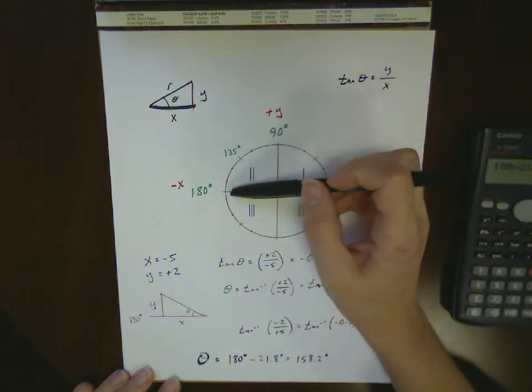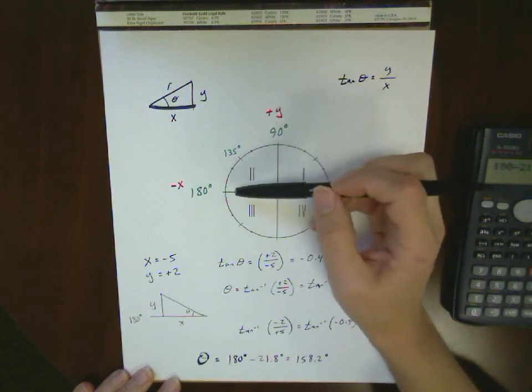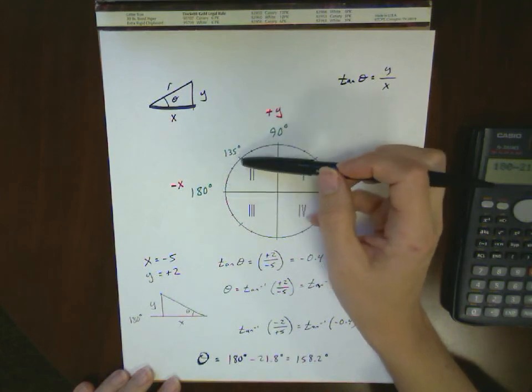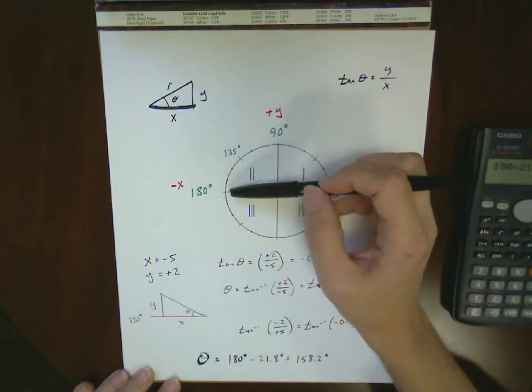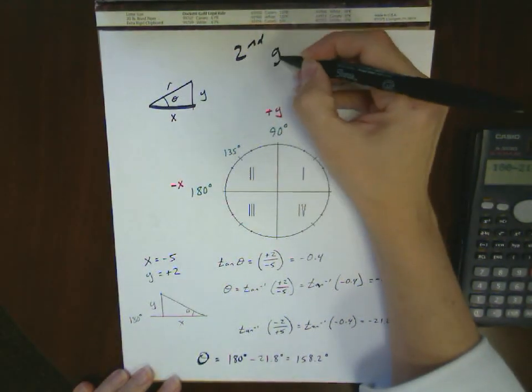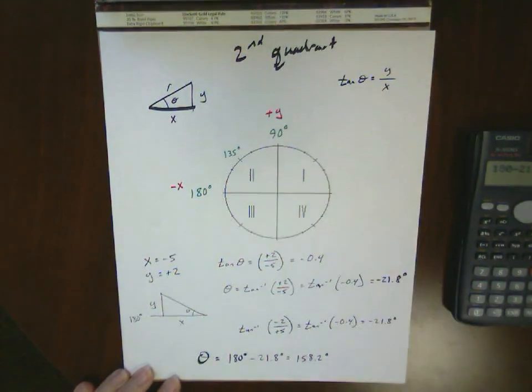I've got a larger value of x, the 5, in the negative direction, and a smaller value of 2 in the y direction. So I'm definitely supposed to be between 135 and 180 degrees. And that's what I get once I take into account the shift of the quadrant. These are second quadrant problems.